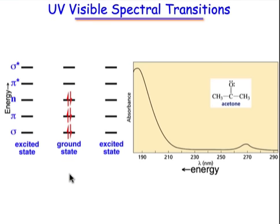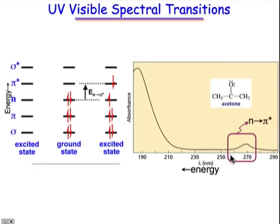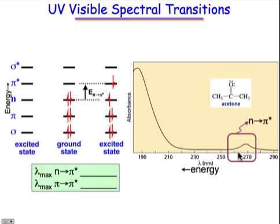The first absorption corresponds to the highest occupied to lowest unoccupied molecular orbital, so that's an n to pi star transition. The n to pi star transition has the smallest energy gap, so on our absorption spectrum, that corresponds to this weak transition. We can assign that lambda max of 270 nanometers as an n to pi star transition.